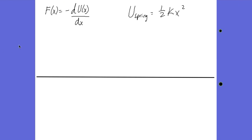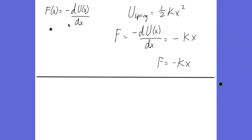Let's apply this formula to the potential energy of a spring. The potential energy of a spring as a function of displacement X is one-half kx squared. Taking the derivative with respect to X: k is a constant, so we bring down the power and subtract one from the exponent, giving us kX. With the negative sign, we get force equals minus kX — which we recognize as the force of a spring, also known as Hooke's Law.